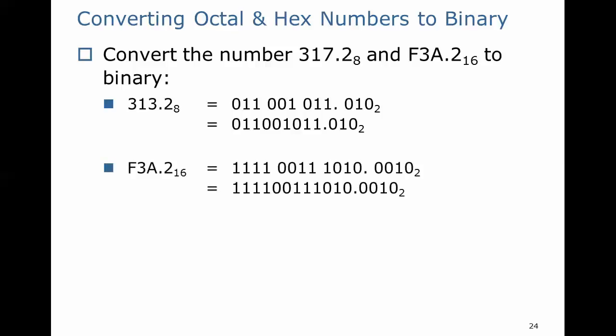Let's take the number F3A.2 base 16 and convert it to binary. Here, we do the same thing. We take each digit in the base 16 number and convert it to its equivalent 4-digit binary value. So F is equivalent to 1111 binary, and then 3 is 0011, and so forth. And you put them all together.